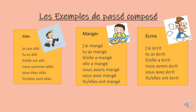Examples of passé composé. The first verb is aller. Aller is part of the Dr. Mrs. Van der Tramp verbs, so the conjugation is: je suis allé, tu es allé, il ou elle est allé, nous sommes allés, vous êtes allés, ils ou elles sont allés. You'll notice that for all the plural forms, we add an S at the end of the past participle, while there is no such addition with je, tu, or il ou elle for singular forms. This exception applies only to être verbs in passé composé.